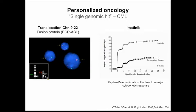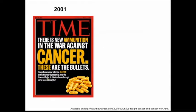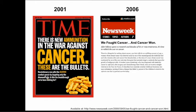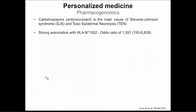This was mind-blowing at the time — you give a single drug to a cancer patient and get this remarkable response. Time Magazine had a cover: 'New ammunition in the war against cancer — you have Gleevec.' The responses were outstanding. But people started to realize hematological malignancies are different from solid tumors. They tried to apply the same concept to lung and breast cancer, and it wasn't working as well. Five years later, Newsweek suggested things were more complicated than initially anticipated.